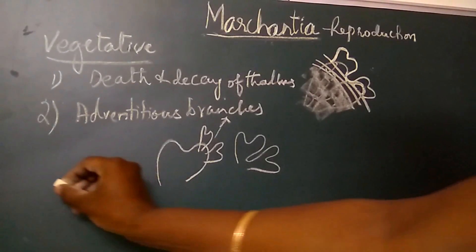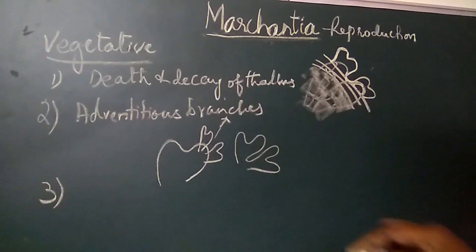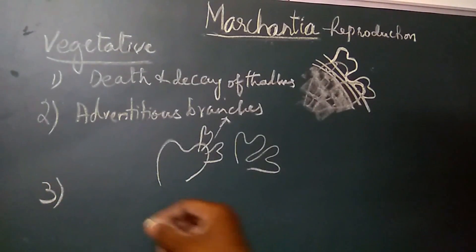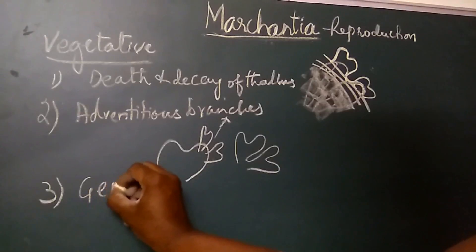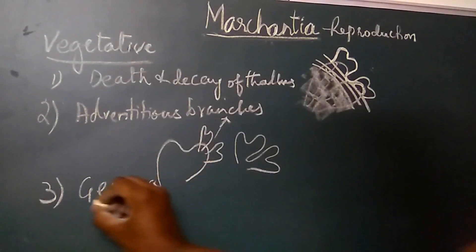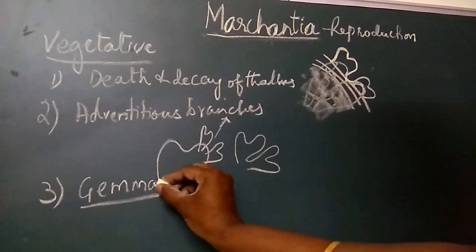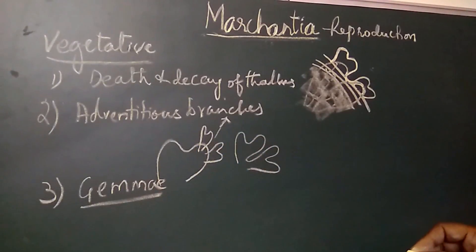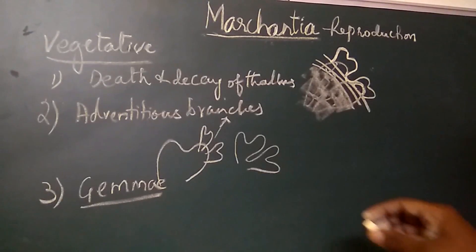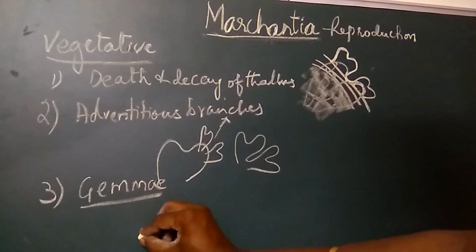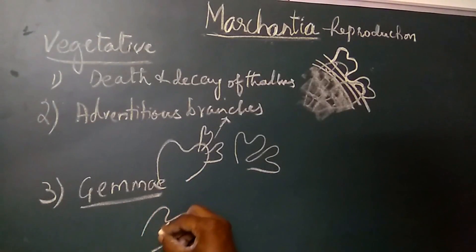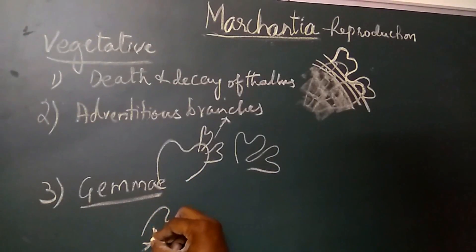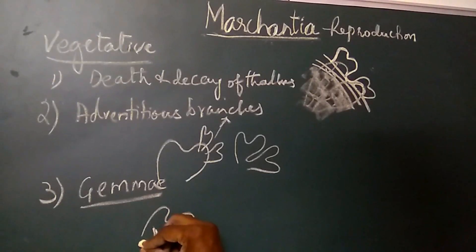The third type of vegetative method of propagation is by the formation of Gemma or Gemmae. These are specialized multicellular asexually reproducing bodies. They are borne on the dorsal surface of the thallus on the midrib in shallow complex structures called Gemma cups.